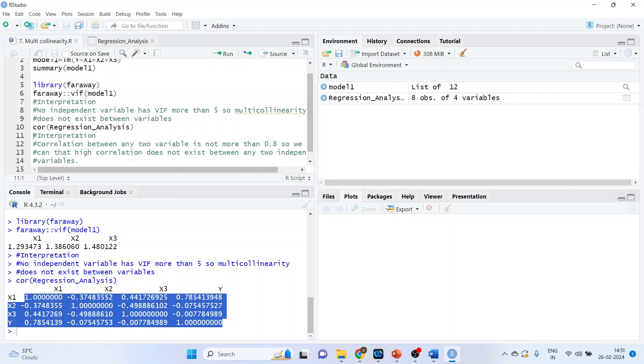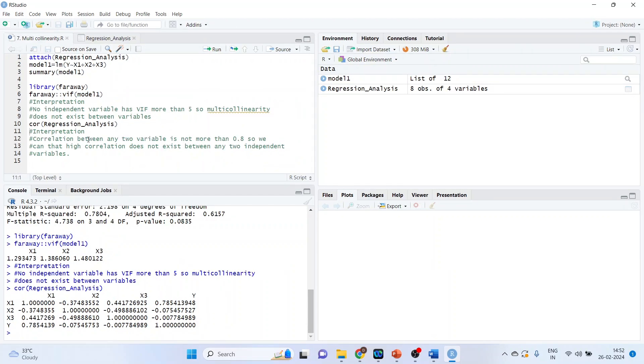What is our interpretation? Let's see. Correlation between any two variables is not more than 0.8. So we can say that high correlation does not exist between two independent variables which is quite good and therefore the multicollinearity is not present.